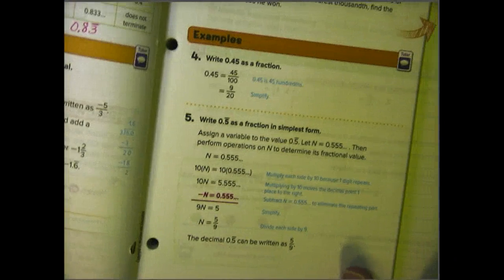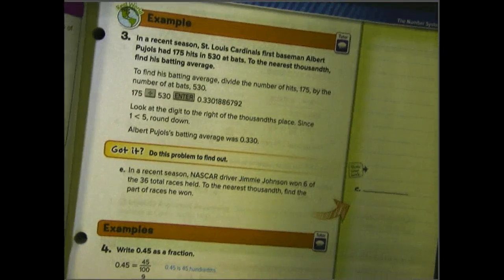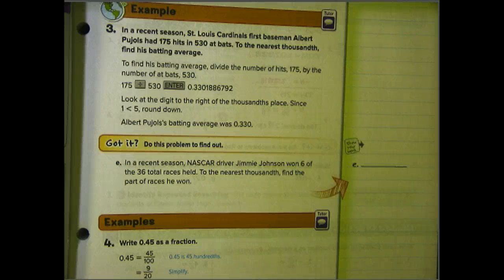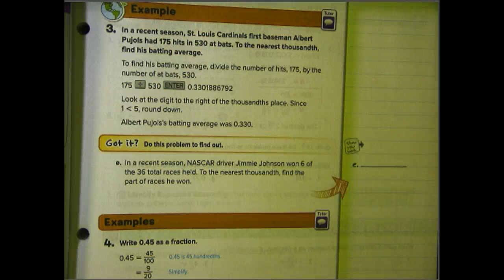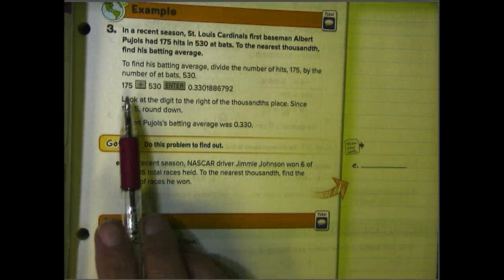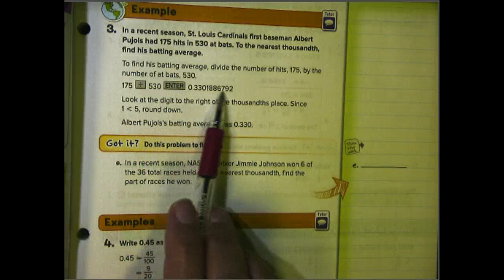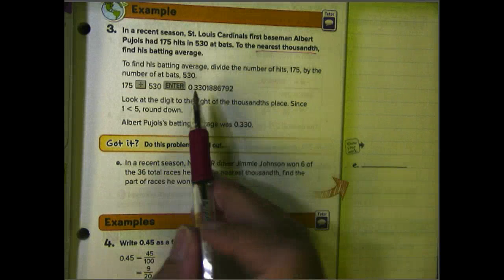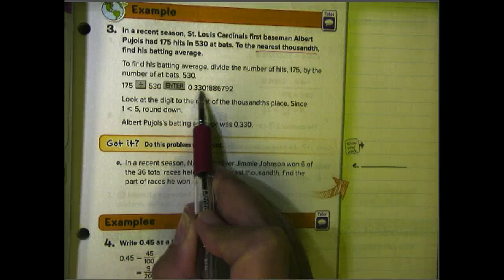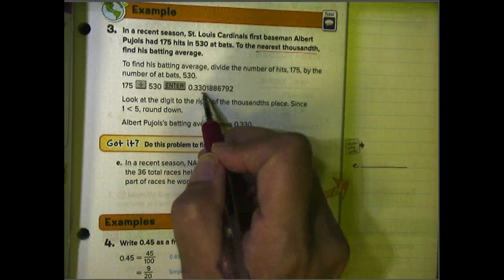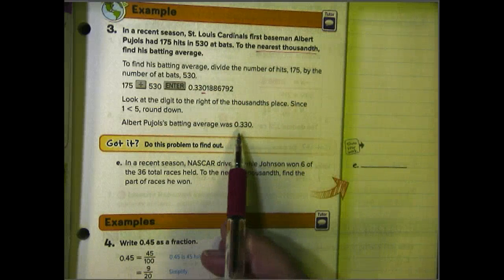In your book on page 9, there's an example at the top that shows a word problem. It says, In a recent season, St. Louis Cardinals first baseman Albert Pujols, and we know that's old because that's no longer the case, had 175 hits in 538 bats. To the nearest thousandth, find his batting average. Now here they are using a calculator to put this in because the number is quite large. And when we do quite large numbers like this I would probably allow a calculator as well. So they put in 175 divided by 530, enter, and they got this long decimal. But we have been requested to do it to the nearest thousandth. Remember that thousandth is going to be, this one is the tenths, this one is the hundredths, this one is the thousandths. So we're going to look at this zero, and we're going to look at the number next to it. The number is a one, so the zero is going to remain. If it were five or over, we would have rounded up. So the batting average was 0.330.